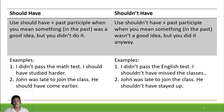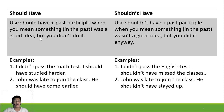You use 'shouldn't have' plus past participle when something in the past was not a good idea but you did it anyway. Remember: 'should have' — it was a good idea but you didn't do it. 'Shouldn't have' — it wasn't a good idea but you did it. Let's look at the examples.